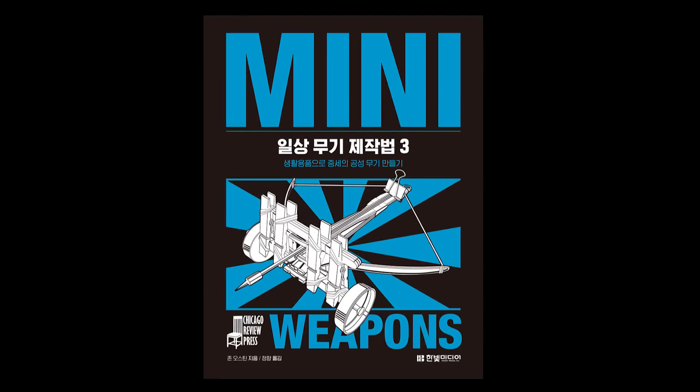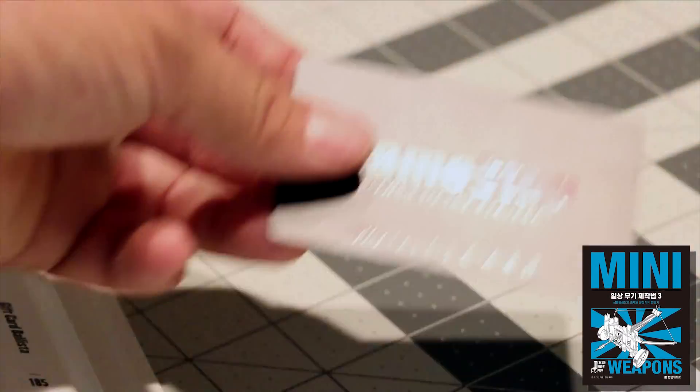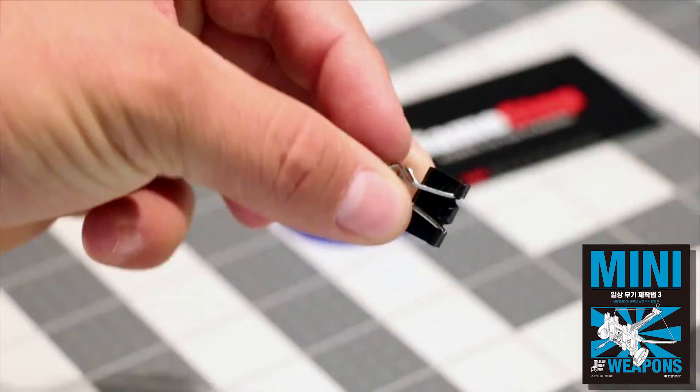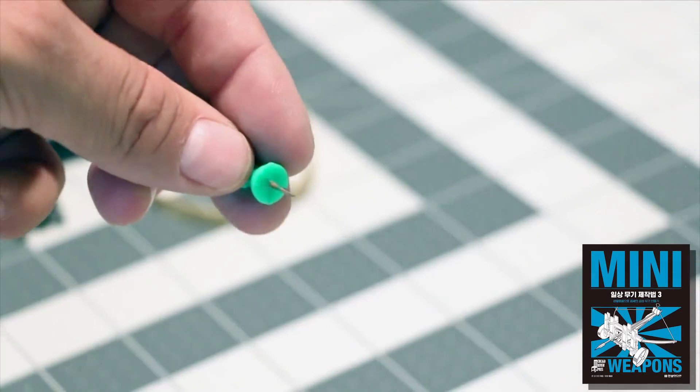For entertainment purposes only. Materials needed: one expired or zero balance plastic gift card, one plastic milk jug cap or similar, one small binder clip 19 millimeters, one wide rubber band, and one pushpin.